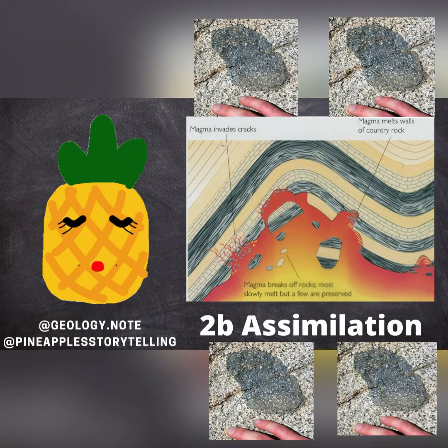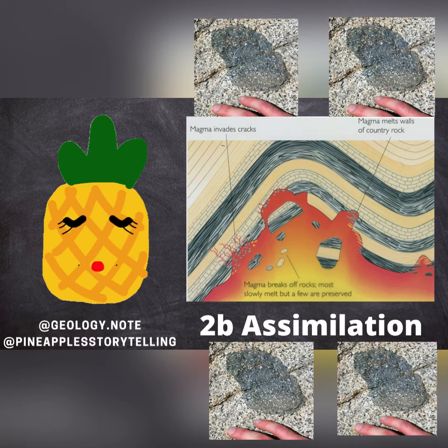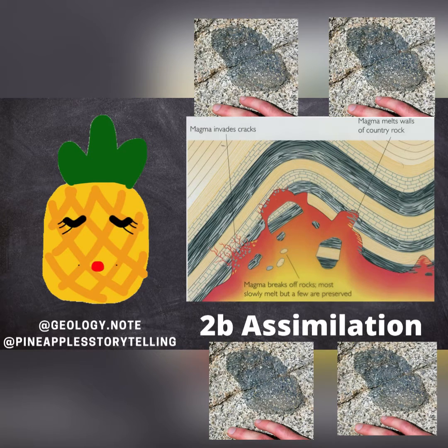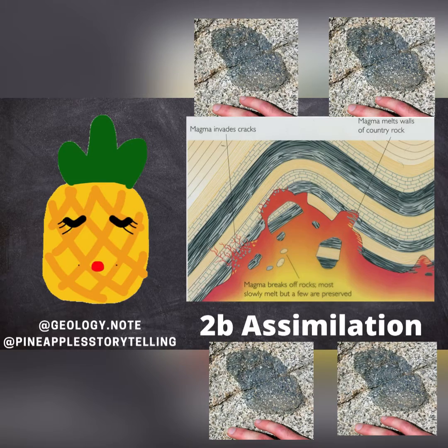Assimilation is where magma melts the country rock when it passes through. We call the blocks of country rocks xenoliths. These xenoliths fall back into the magma, altering the magma composition. Some xenoliths may get dissolved, but some may get preserved.